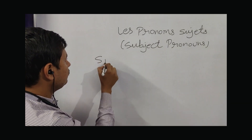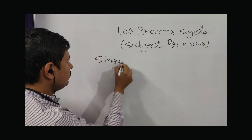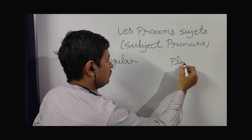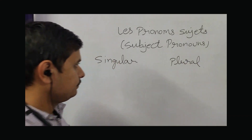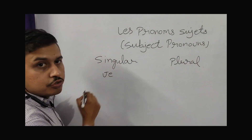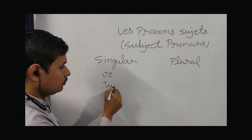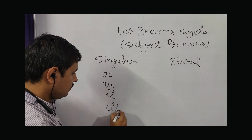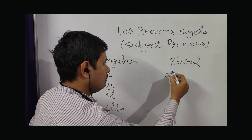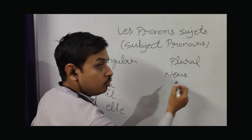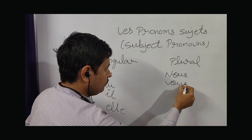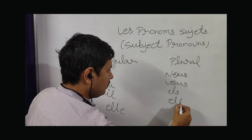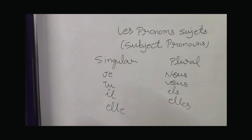So here we have singular and here we have plural: je, tu, il, elle, nous, vous, ils, elles.